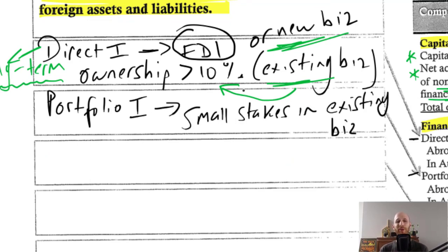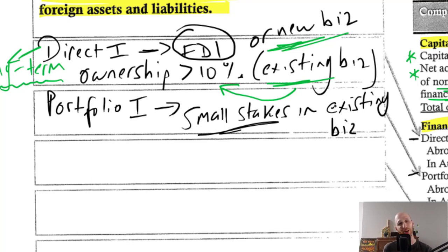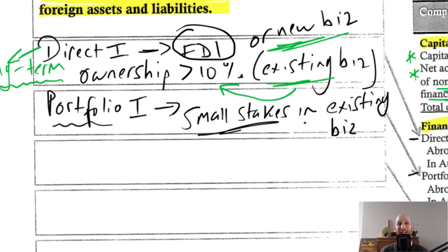Portfolio investment involves taking small stakes in existing businesses — a little bit here, a little bit there — where none of the individual stakes reach that 10% threshold that would push it into foreign direct investment. So portfolio investment is those smaller stakes across multiple existing businesses.